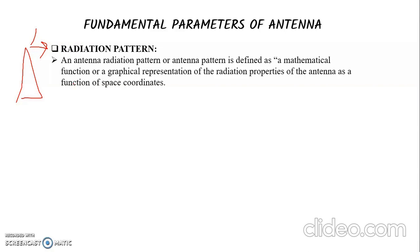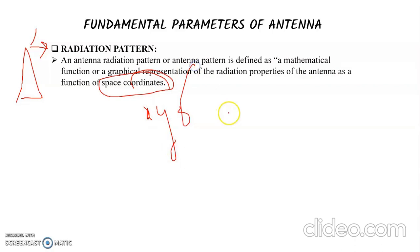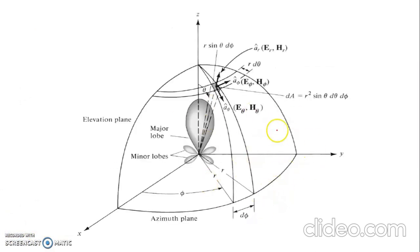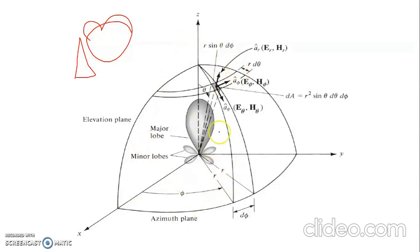An antenna radiation pattern is defined as a mathematical function or a graphical representation of the radiation properties of the antenna. The radiation pattern is mentioned in terms of space coordinates — x, y, and z. It may also be expressed as a power pattern, electric field pattern, or voltage pattern, as seen in this figure showing the antenna's main radiation.